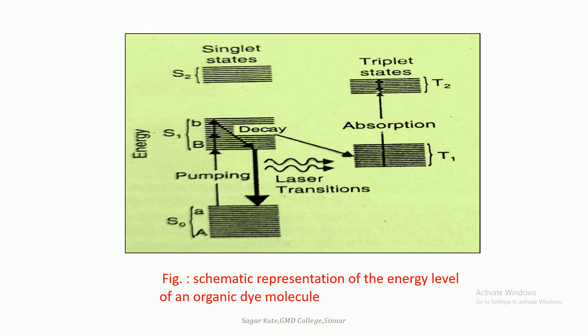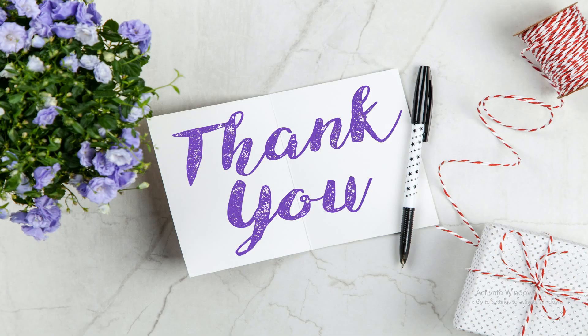In Module 3, we discussed the principle, construction, and energy level diagram of lasers. In solid state lasers, we discussed the ruby laser, Nd:YAG laser, and semiconductor laser. The second type is gas lasers, where we discussed the helium-neon laser, carbon dioxide laser, and excimer laser. The third type is liquid lasers, in which we discussed the tunable dye laser. Thank you so much.